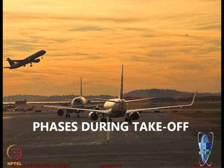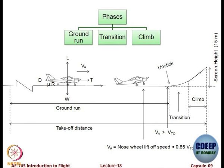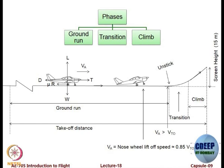There are three basic phases during takeoff — it does not take place in one shot. First is the ground run, from the stationary position to the point where you leave the ground. After that there is a transition phase when you clear the obstacle height or screen height. Then you have the climb phase.